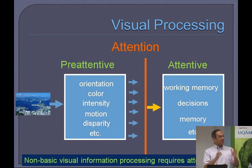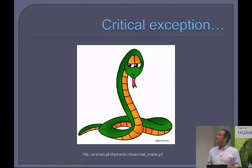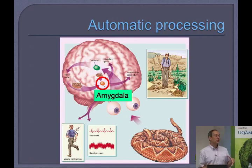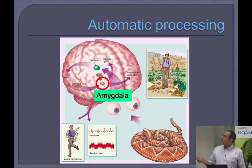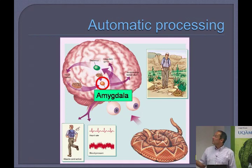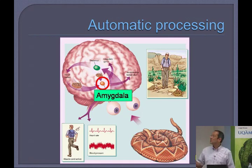However, at the same time and roughly in parallel in the 90s, there was a suggestion that there was a critical exception to this type of processing: the processing of emotional stimuli. The idea, largely motivated by the work of LeDoux and others, was that there would be specialized pathways that would rapidly convey emotion-laden information to structures such as the amygdala, so that even without attention a person would successfully run away and survive.